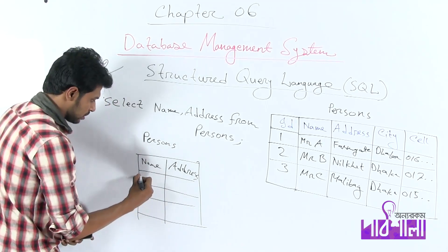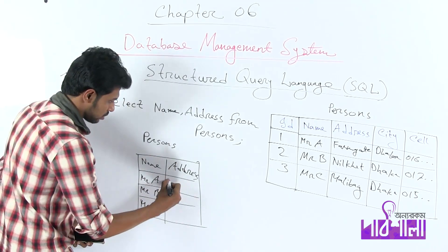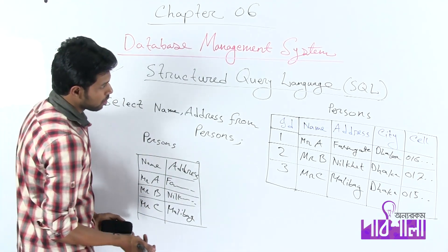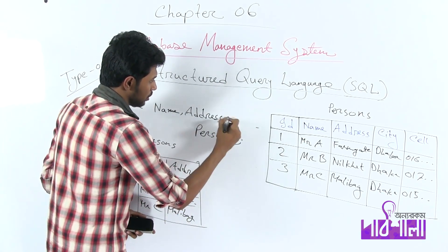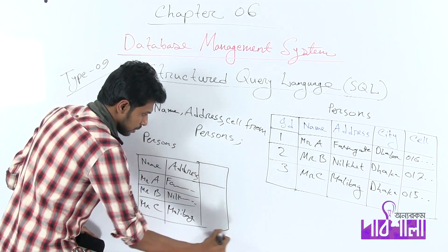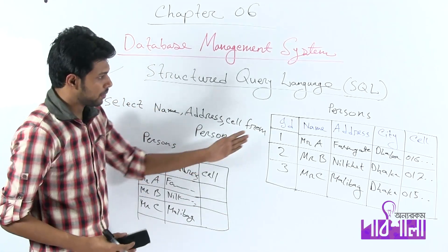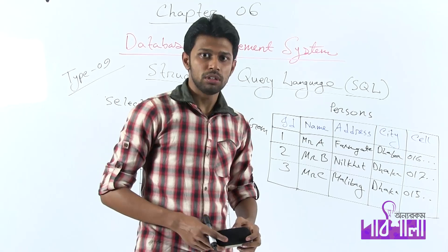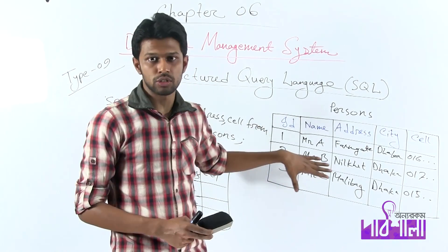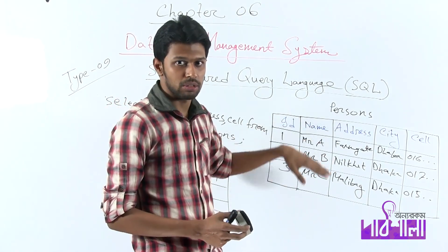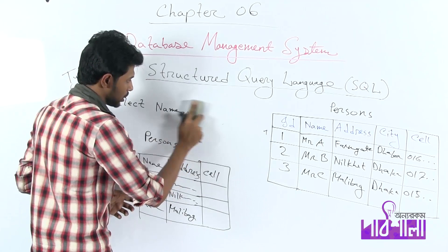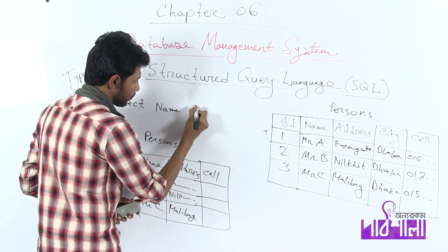You can see name and address. If you want to select specific columns, write: SELECT name, address FROM persons. You will see a table with name and address columns from persons. Here we have Mr. A, Mr. B, Mr. C with addresses Farmgate, Farngate, Niel, and Malibar. You can also select the cell column from the persons table.